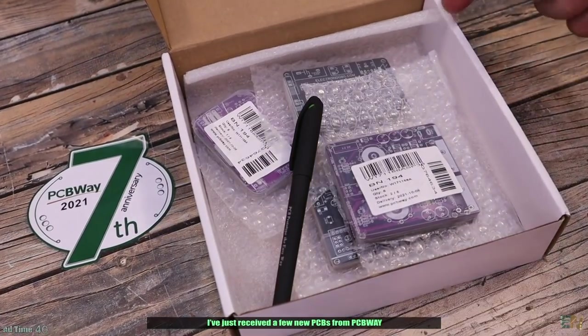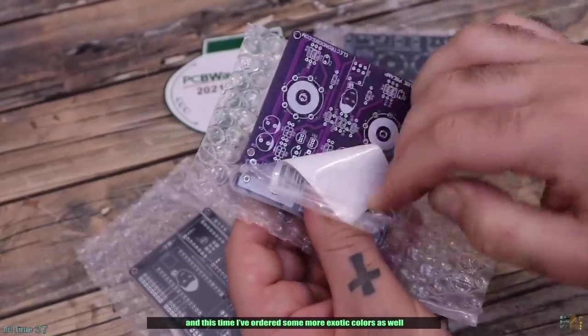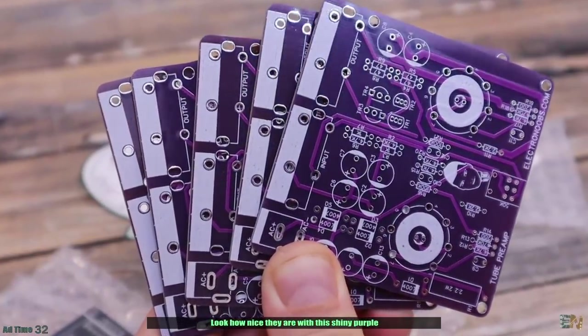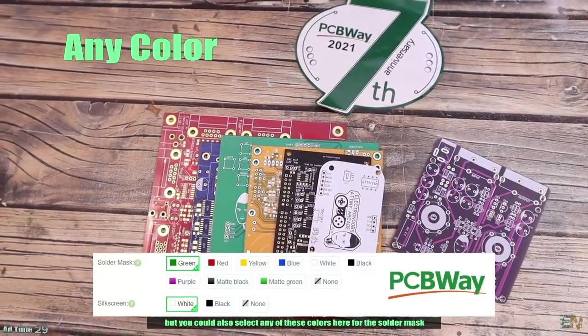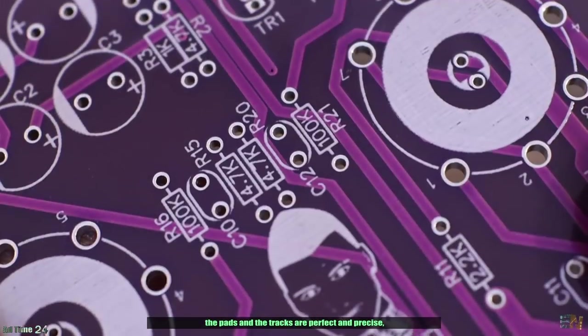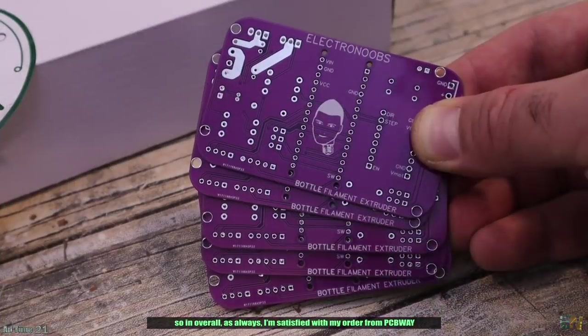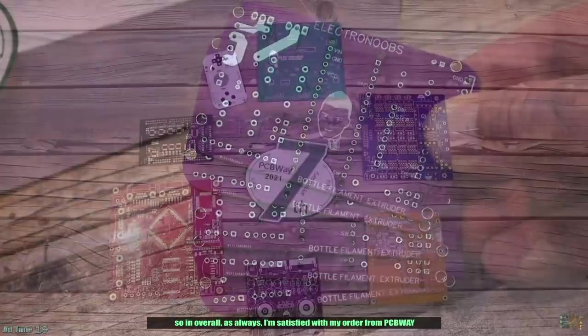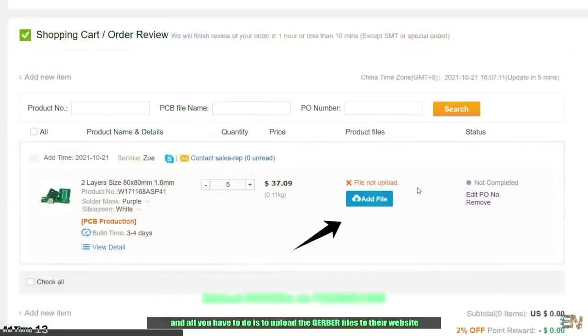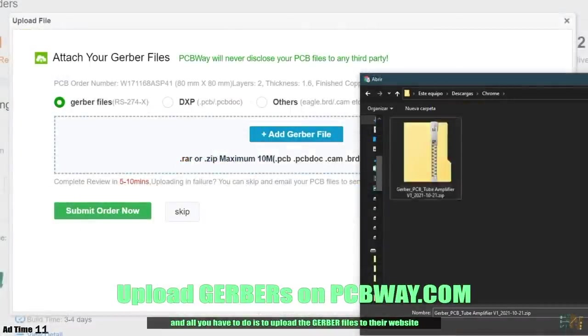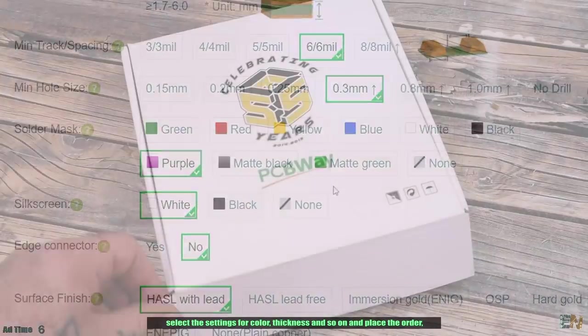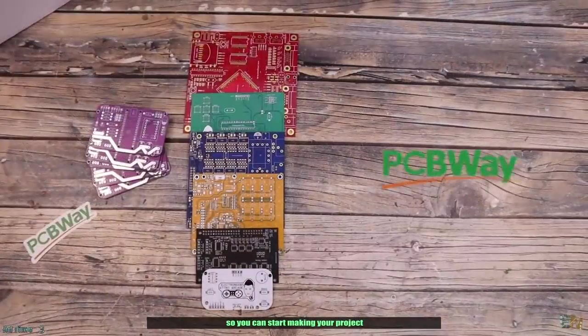I've just received a few new PCBs from PCBWay and this time I've ordered some new exotic colors as well. Look how nice they are with this shiny purple, but you could also select any of these colors for the solder mask. The silk layer is very good, the pads and tracks are perfect and precise, so overall, as always, I'm satisfied with my order from PCBWay. For only $5 you can get 5 PCBs for your prototypes. All you have to do is upload the Gerber files to their website, select the settings for the color, the thickness and so on, and place the order. In a few days you receive your awesome PCBs so you can start making your project.